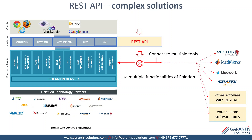Now, when REST API comes along, it extends the existing types of interfaces. We can use multiple functionalities of Polarin — the blue area in the middle — and connect to multiple tools on the right side. We can connect to other software tools with REST API, for example Microsoft Office Teams or your custom software tools, if they have REST API.